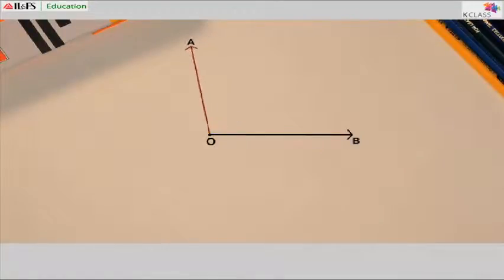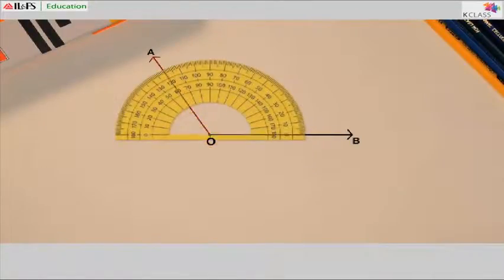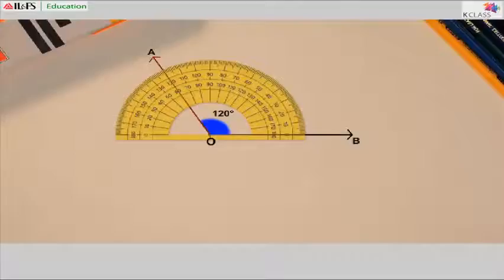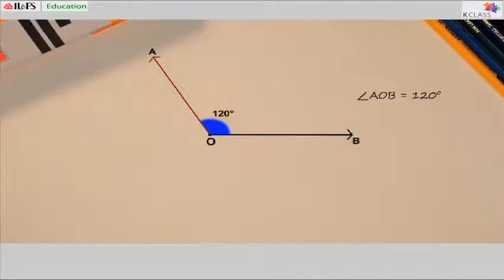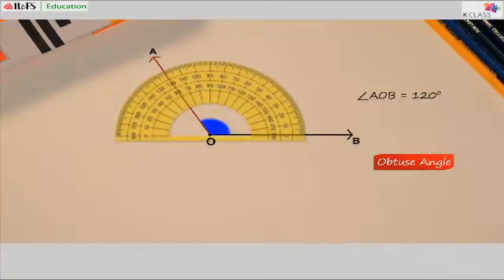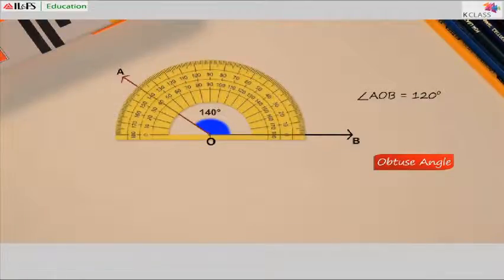Now check this out. The protractor reads 120 degrees — beyond 90 degrees. An angle more than 90 degrees but less than 180 degrees is an obtuse angle. Here angle AOB is equal to 120 degrees, so it is an obtuse angle. All these are obtuse angles.